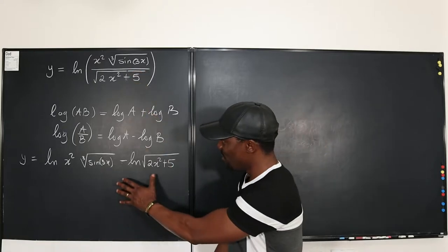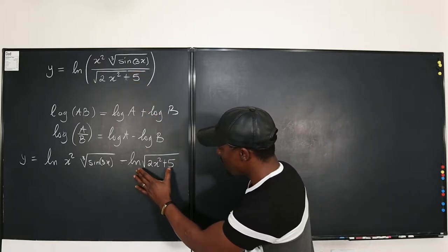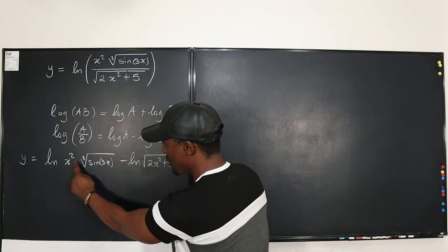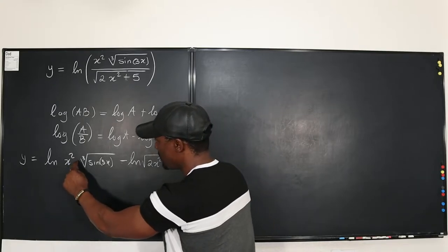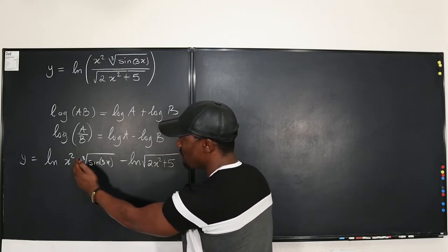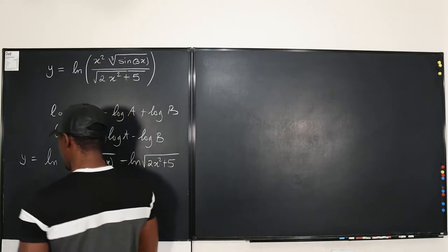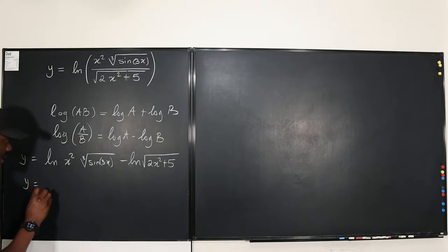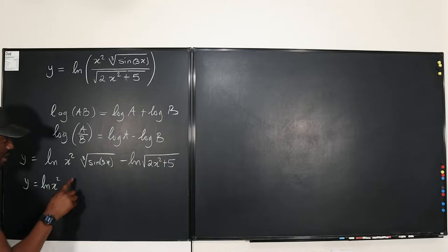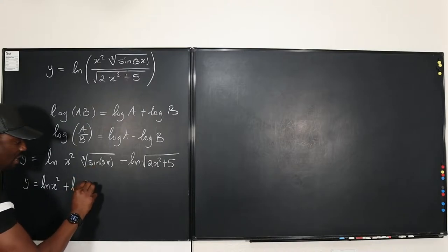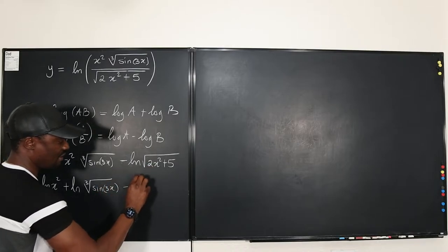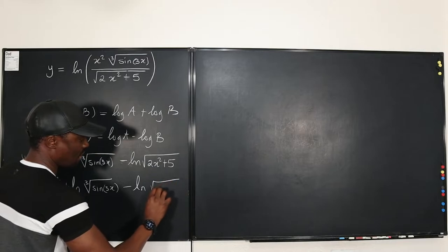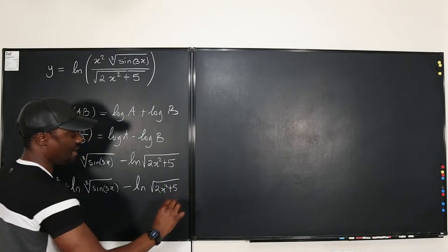At this point, let's see what else we can do. We can't do anything to the second term, but this first logarithm argument is a product of two functions. So we can break it up using the product rule for logarithms. So y equals the natural log of x squared, plus the natural log of the cube root of sine 3x, minus the natural log of the square root of 2x squared plus 5.